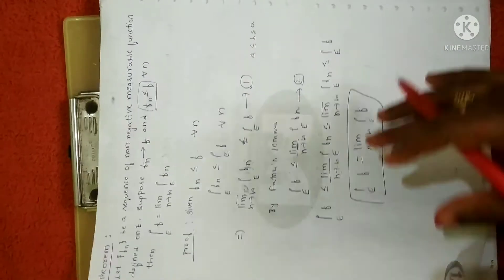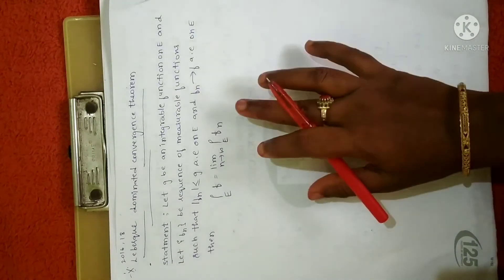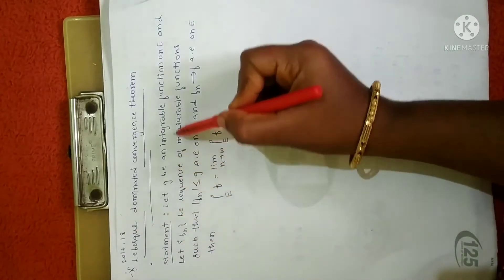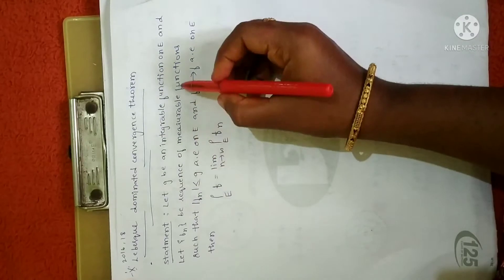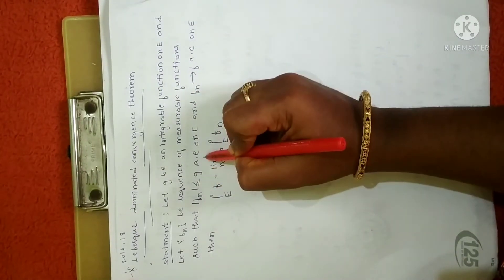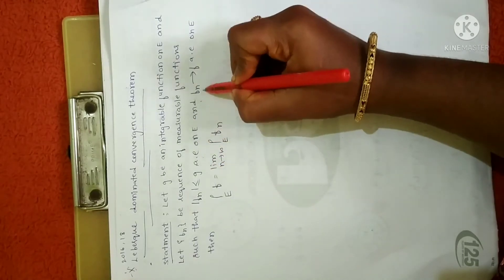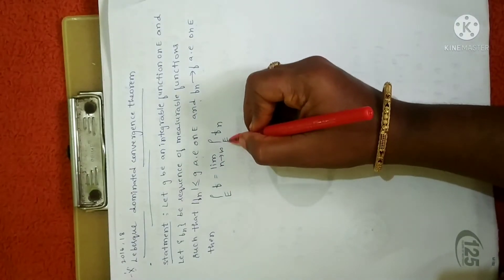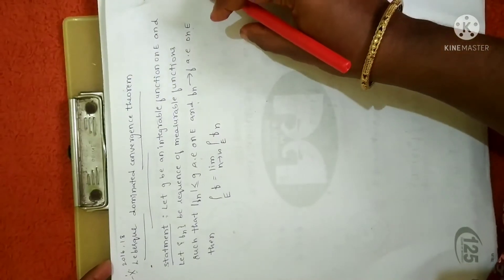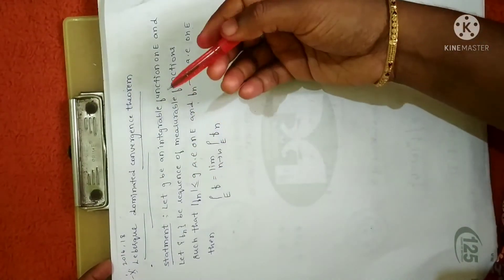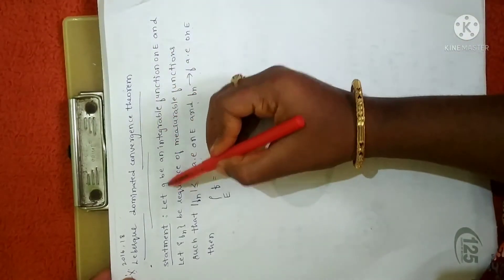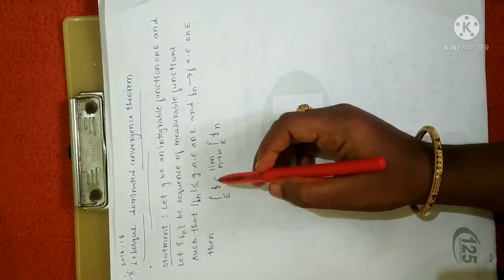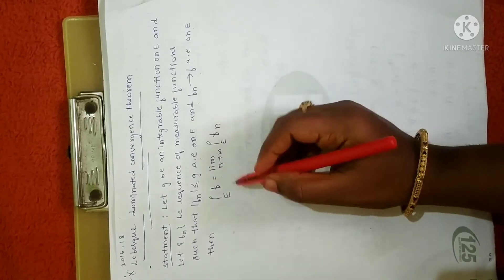Now let me prove one more important theorem: the Lebesgue Dominated Convergence Theorem. You need to memorize this statement — it is important as it appeared in the years 2016 and 2018. The statement is: if g is an integrable function on E, and fn is a sequence of measurable functions such that |fn| ≤ g almost everywhere on E, and fn converges to f almost everywhere on E, then the integral over E of f equals the limit as n tends to infinity of the integral over E of fn. Every statement resembles the same form, but the terms used are different. Here g is clearly stated as an integrable function.